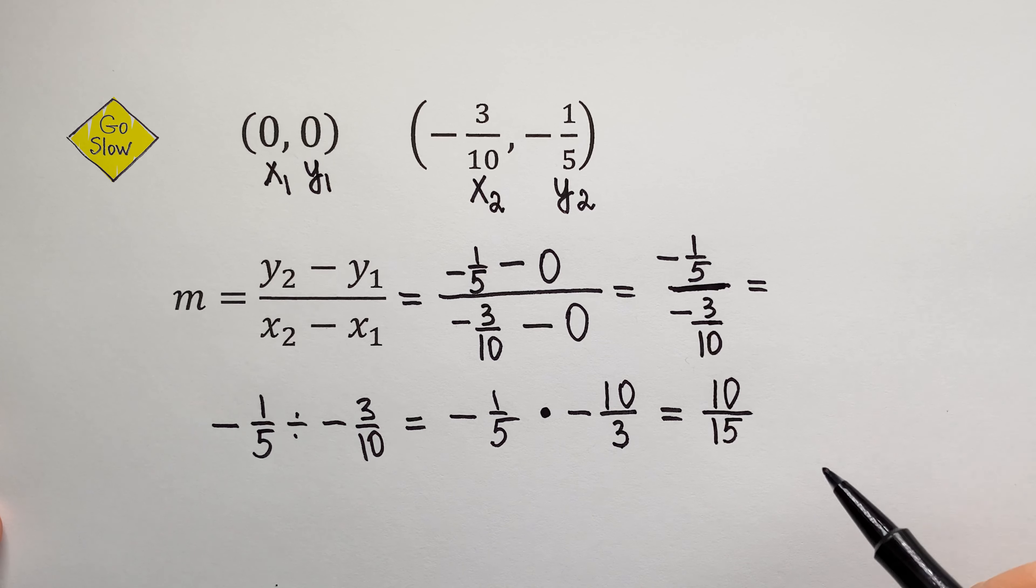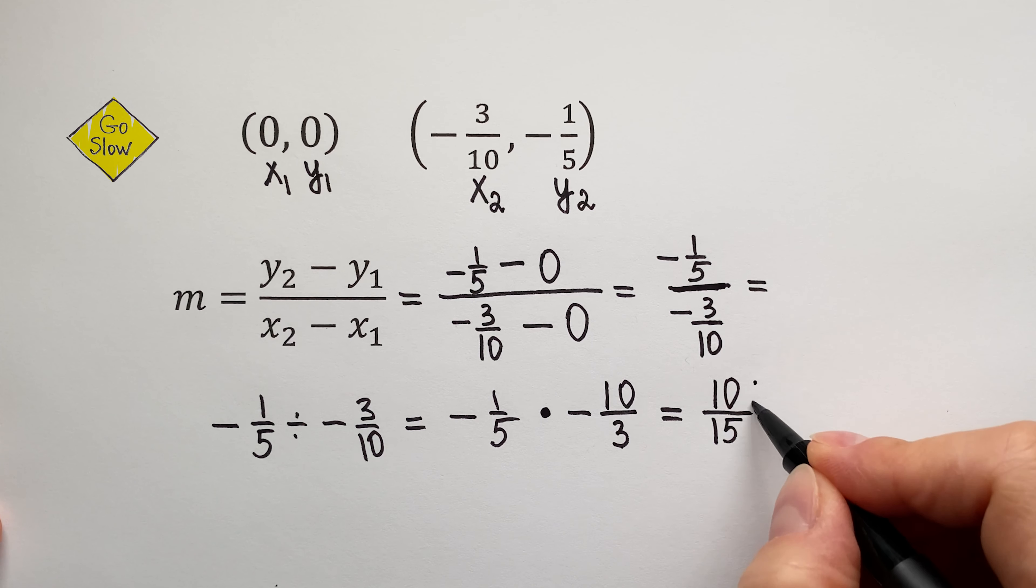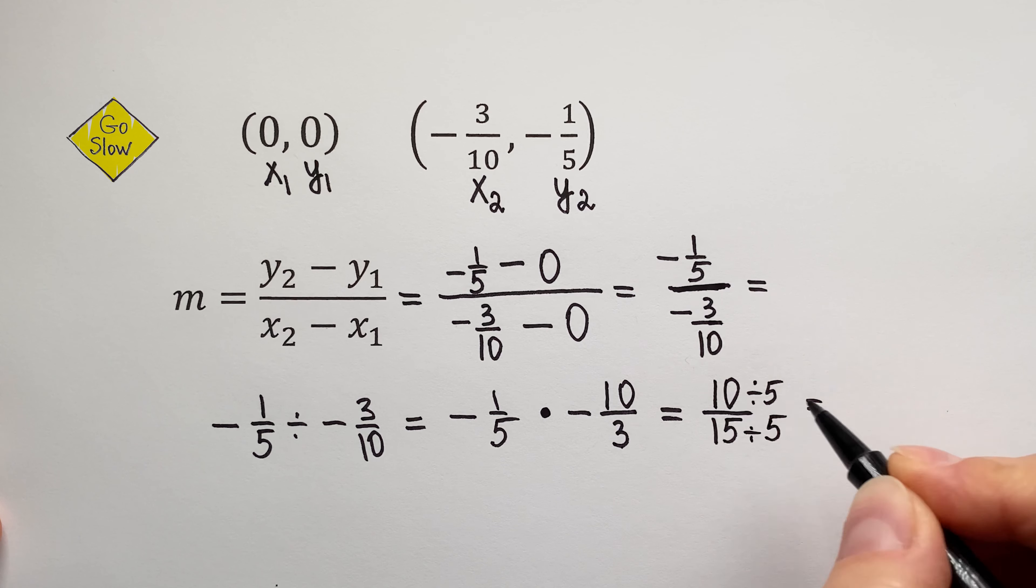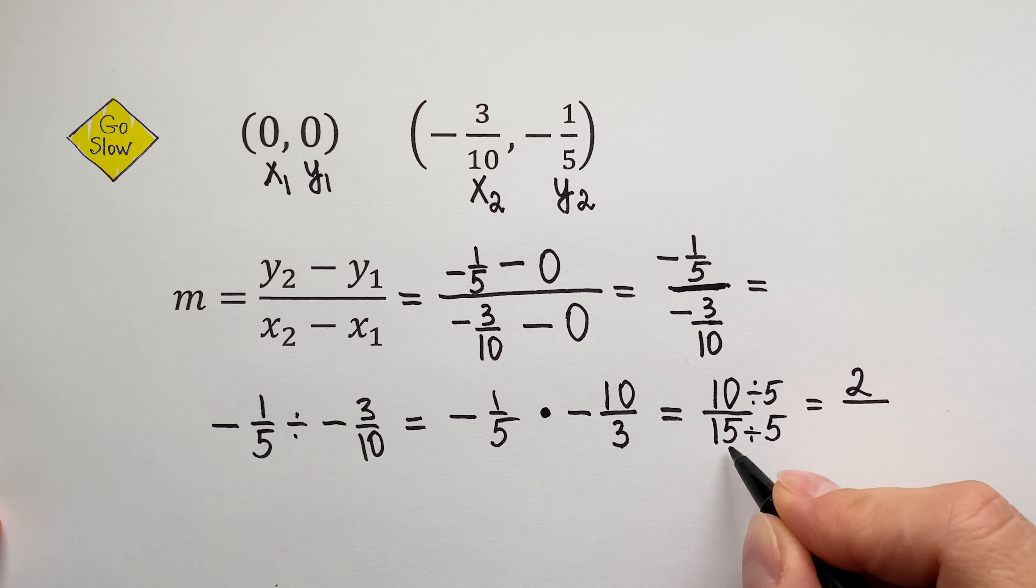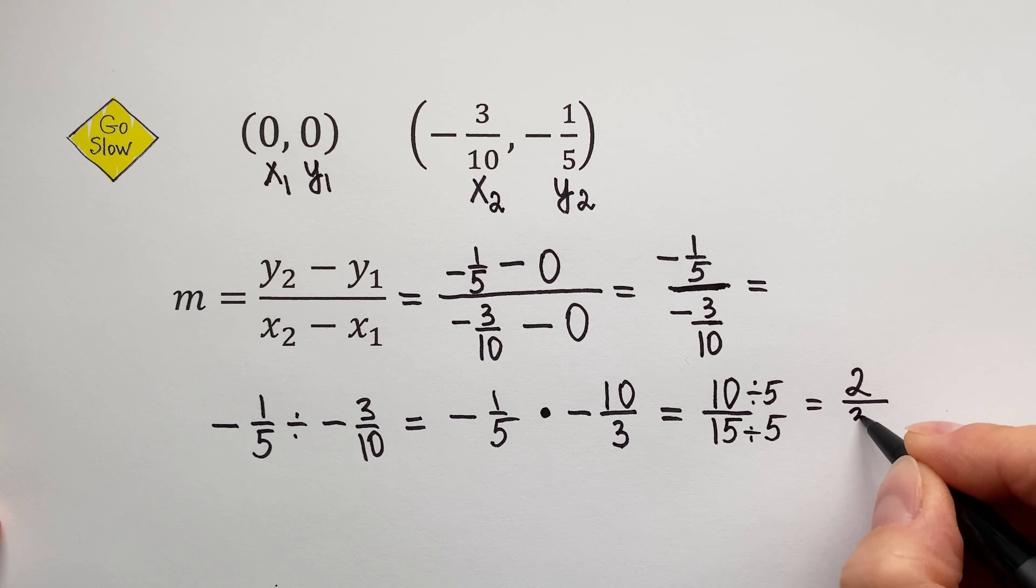Very good! But do not stop! We need to reduce this fraction, because numerator and denominator can be divided by 5. So, let's divide by 5. 10 divided by 5 is 2.